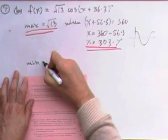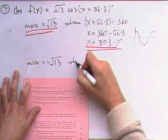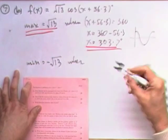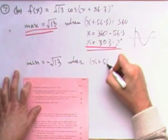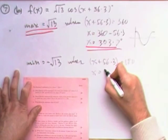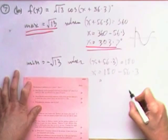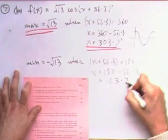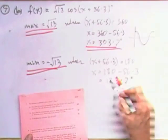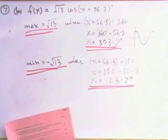And similarly, for the minimum, the minimum will be negative root 13 because it goes up and down by the same amount. Only with a cosine, it's at its minimum when the angle is 180. So, that's going to happen when x plus 56.3 equals 180. So, x is going to be 180 minus 56.3, which means that x is going to be 123.7. So, minimum when x equals 123.7.